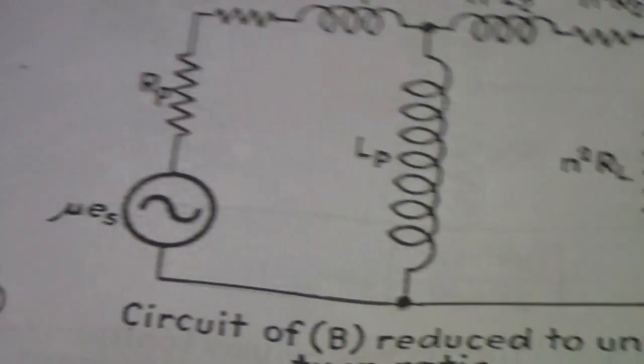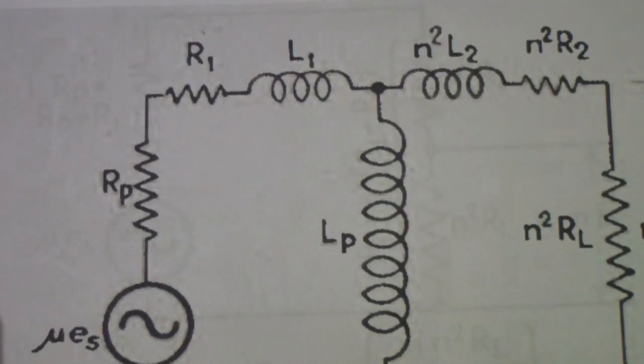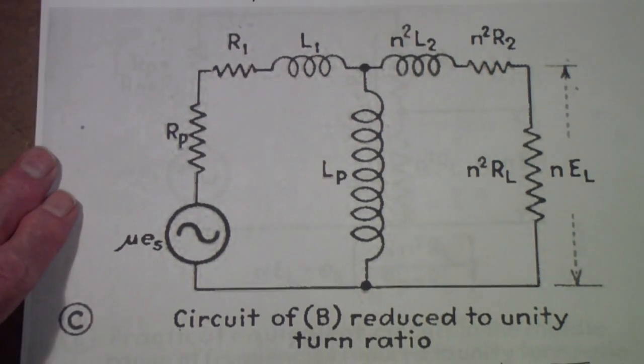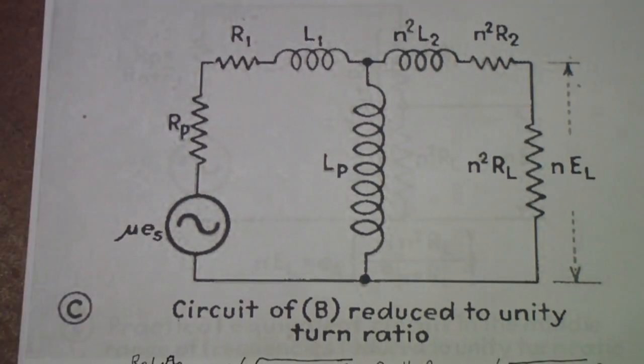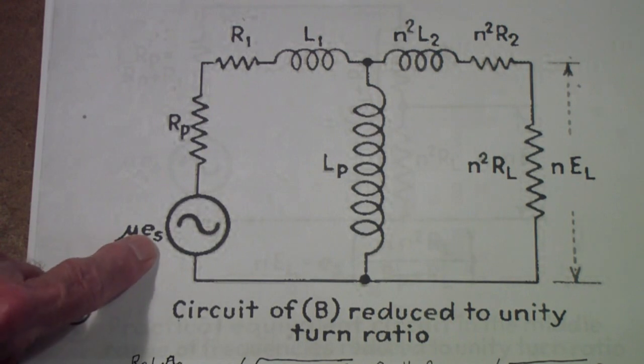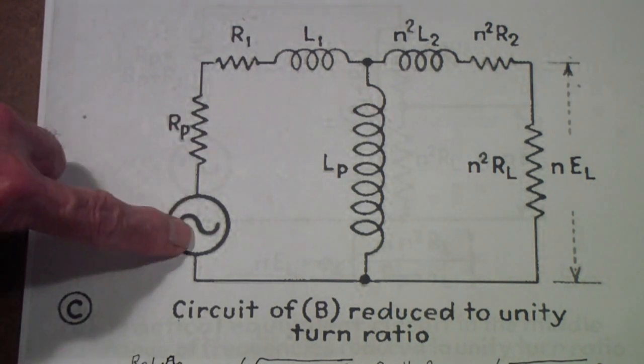In other words, this is what the tube sees. This is the tube. Mu is the amplification factor. Es is the input signal or the grid voltage. Rp is the plate resistance of the tube. Now, we'll look in a second at some other things.